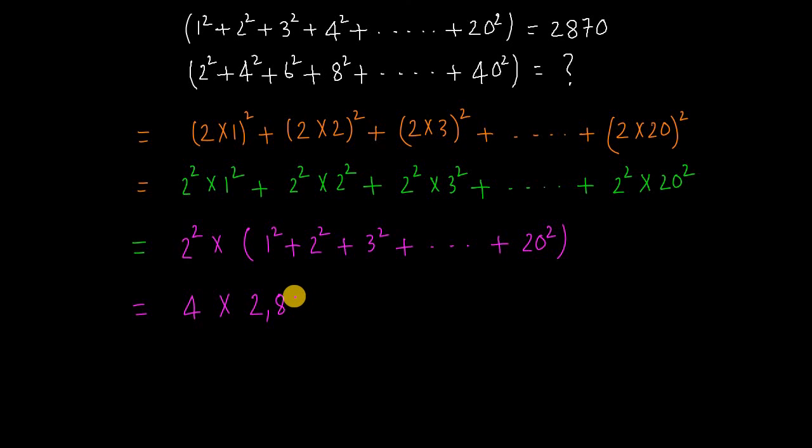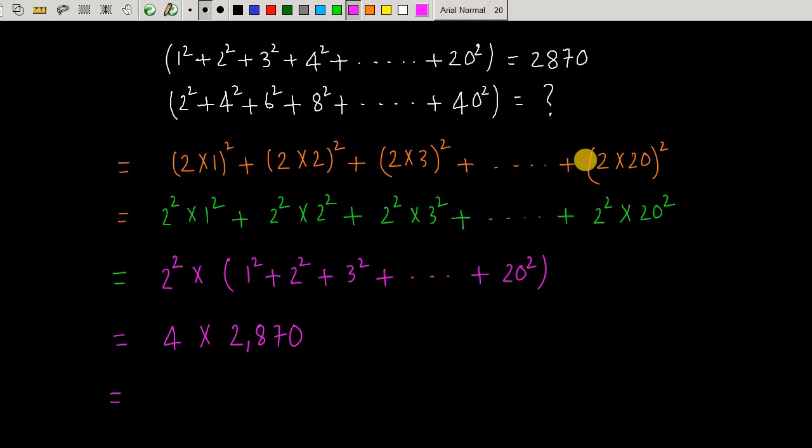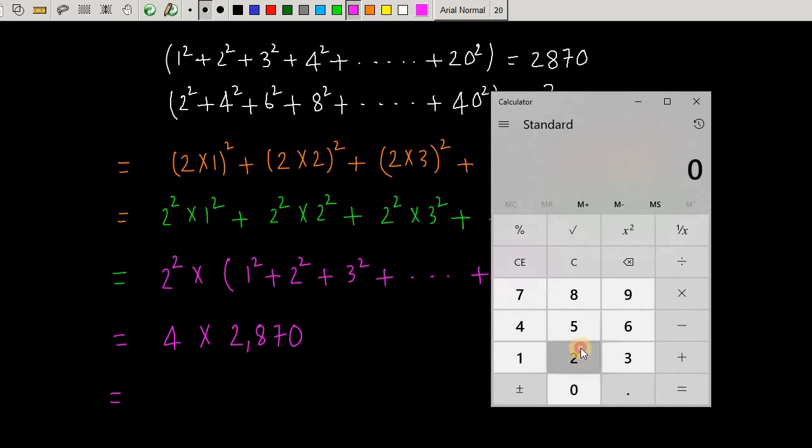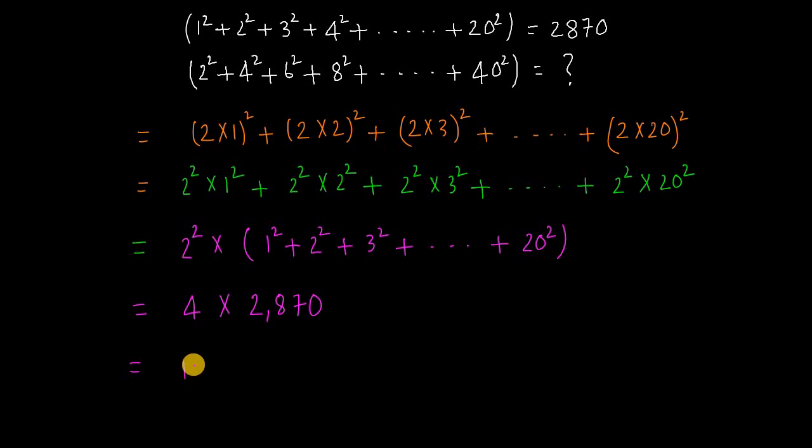We can factor this expression and get 4 × 2870 = 11,480. The value of the expression is 11,480. This is our answer.